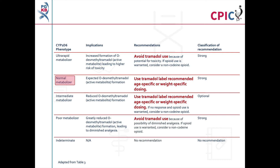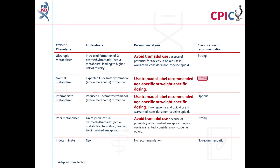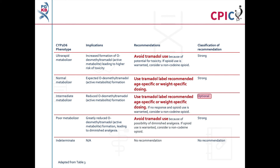Patients with a CYP2D6 normal metabolizer phenotype will have expected rates of O-desmethyltramadol formation. These patients can be given tramadol using the age or weight specific dosing recommendations given on the label. This is a strong recommendation. Patients with a CYP2D6 intermediate metabolizer phenotype will have reduced O-desmethyltramadol formation. These patients can be given tramadol using the label dosing recommendations, but if the patient does not respond and opioid use is warranted, consider a non-codeine opioid. This is an optional recommendation.